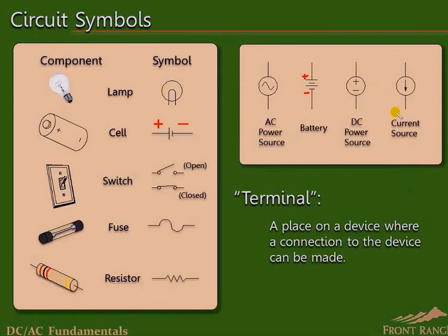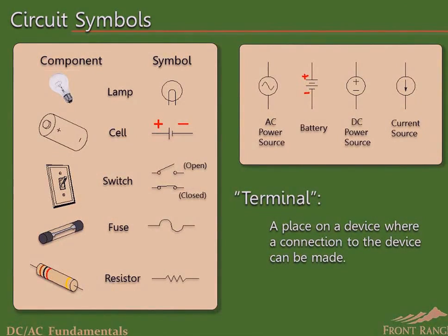Last on the far right is the symbol for a DC current source. Physical devices that act as current sources are derived from voltage sources with some additional components. Later we will see that when analyzing circuit behavior, it is sometimes convenient to treat one or more energy sources as if they were current sources instead of voltage sources.